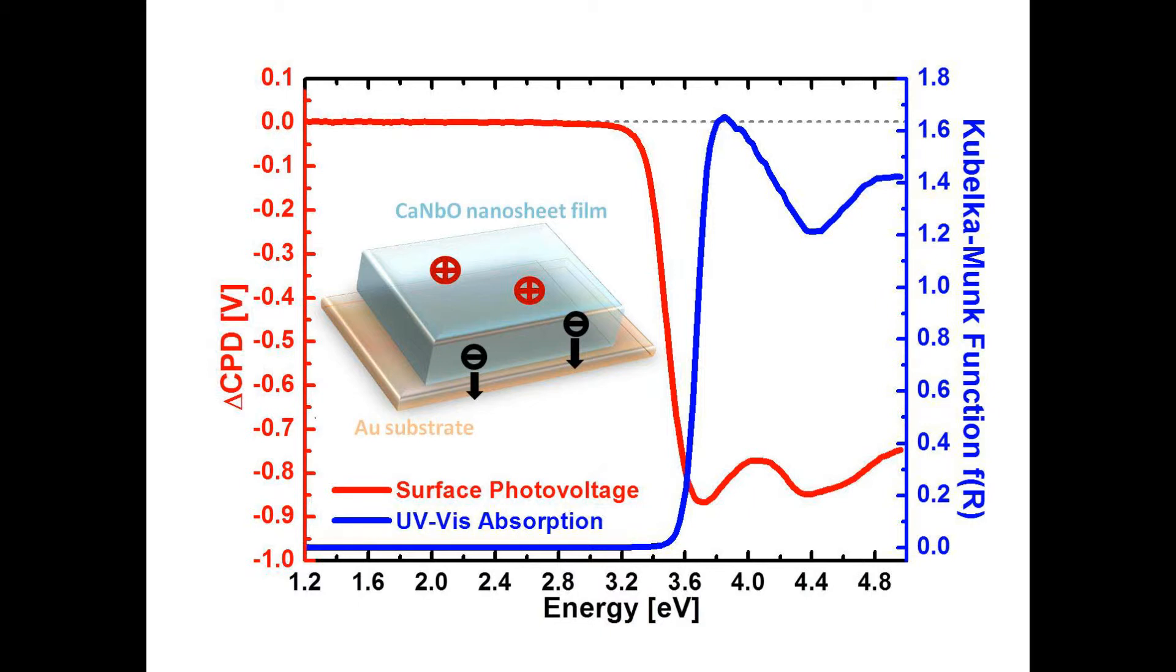Besides, the sign of the CPD change tells us how the charge separation happens in the film. Specifically in this case, the negative signal suggests that the electrons are being preferentially injected into the substrate and the holes are staying on the film.